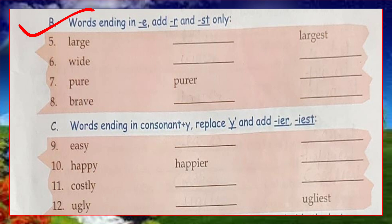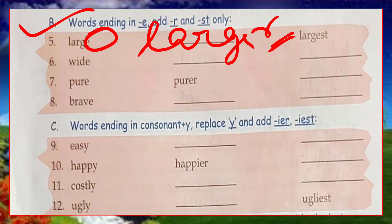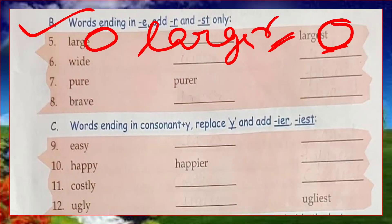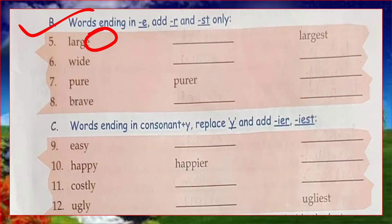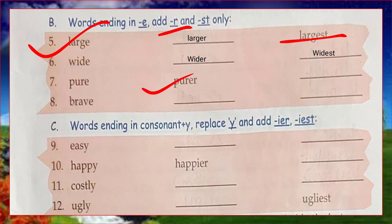Here are some rules to follow. If any word ends with -e, we just add -r for comparative and -st for superlative. For example: large → larger → largest; wide → wider → widest; pure → purer → purest; brave → braver → bravest.